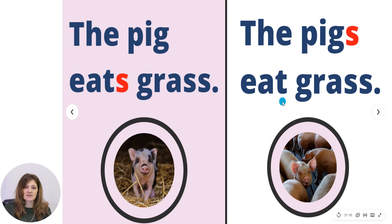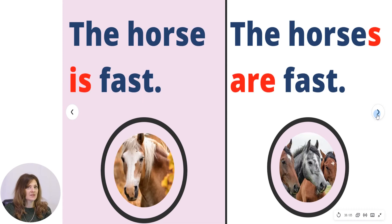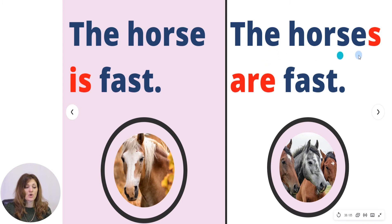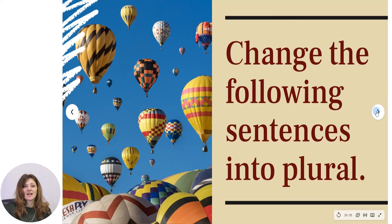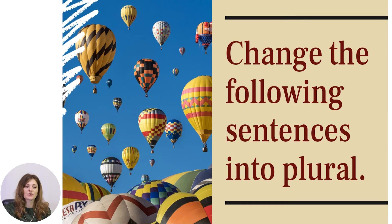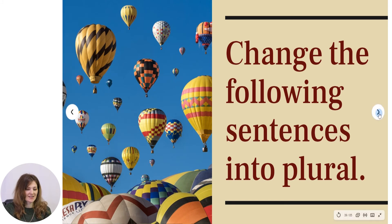The pigs eat grass. Let's look at another example. The horse is fast — and in plural: the horses are fast. That's very easy. Let us continue with the next exercise. This time you have to change the following sentences into plural. If you are ready, let's get started.